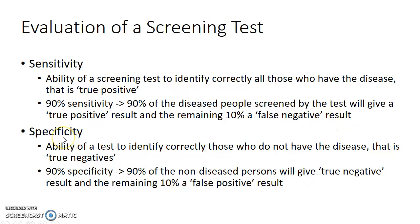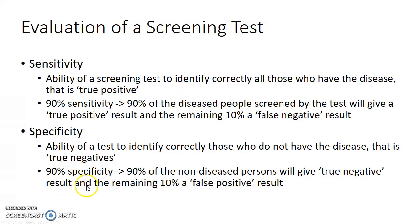Specificity is defined as the ability of a test to identify correctly those who do not have the disease, i.e. true negatives. If a screening test has 90% specificity, it means that 90% of the non-diseased persons will give a true negative result and the remaining 10% will give a false positive result.